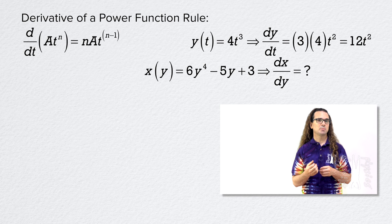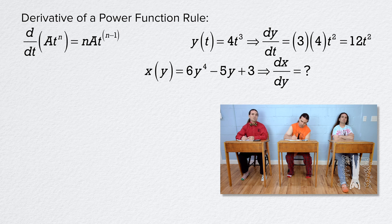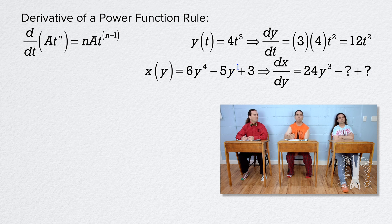What about the derivative of this x position as a function of y position equation, taking the derivative of x position with respect to y? So x position as a function of y position equals 6 times y to the fourth power minus 5 times y plus 3. The derivative of x position with respect to y position equals: 4 times 6 equals 24 times y to the 4 minus 1, which is 3, so y to the third power. For 5y, a equals 5 and n equals 1, so the derivative with respect to y of 5y equals just 5.